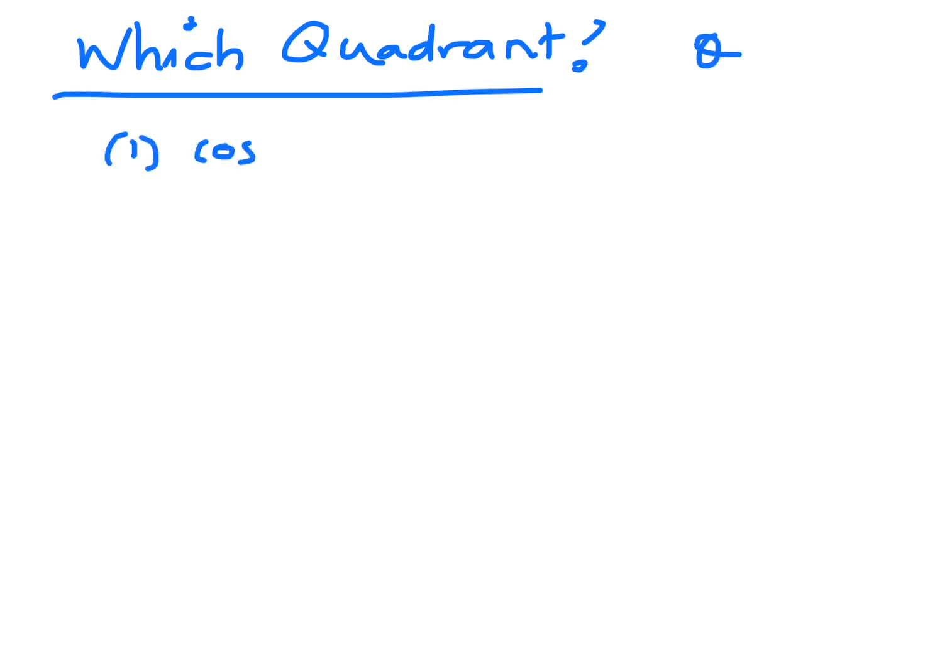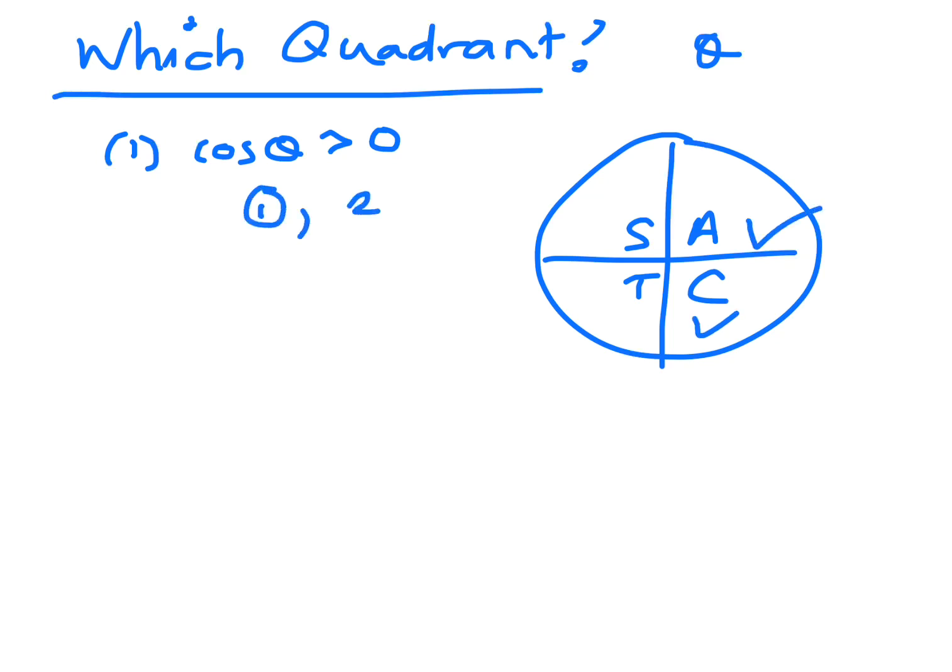If cos theta is greater than 0, I might just put this in here too, it's all stations to Coffs Harbour. If we look at this, cos theta is greater than 0, so where is cos positive? Cos is positive in quadrant 1 and 2.